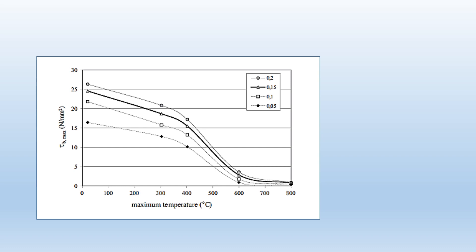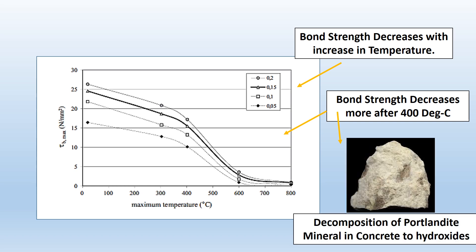It would normally decrease with increase in the temperature. Chemical adhesion and friction are both lost at high temperature in the concrete and steel. So bond strength decreases appreciably above 400 degrees Celsius as concrete decomposes and degrades. The result is the decomposition of Portlandite mineral in concrete to hydroxides at this temperature.